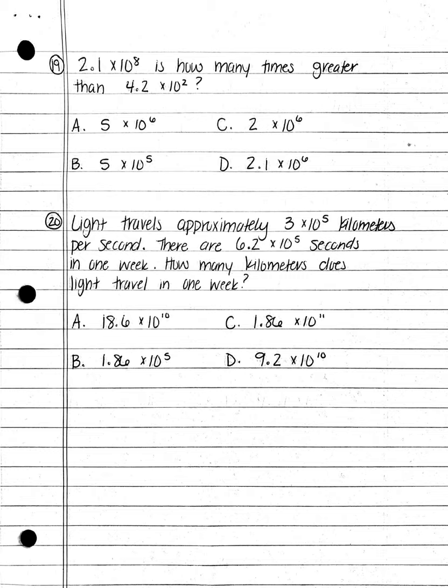Number 19. 2.1 times 10 to the eighth is how many times greater than 4.2 times 10 squared? A. 5.10 times 10 to the sixth power; B. 5.10 times 10 to the fifth power; C. 2.10 times 10 to the sixth power; or D. 2.1 times 10 to the sixth power.